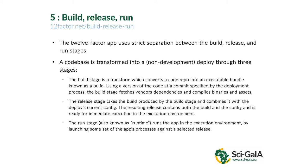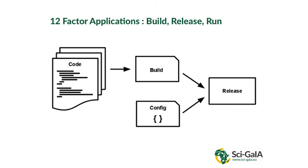The suggestion for a 12-factor application is to use strict separation between these environments: the build environment, the release environment, and the run environment. Here is where that single code base is transformed via the setting of various variables. That's why it's important to separate them — you don't keep the configuration in a file, but in something that can be instantiated at execution time. Those three environments will be strictly separated, and the configuration is pulled in at the time the application is built.